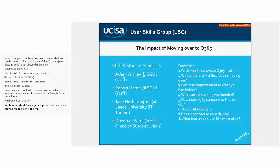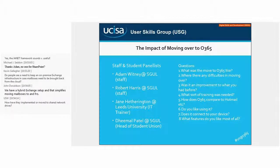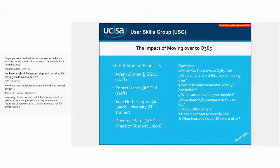A question from Kevin asks whether people see a need to keep on-premises Exchange infrastructure in case mailboxes need to be brought back from the cloud. John responds: because they still have Exchange for staff on-premises they have a hybrid setup that allows mailboxes to be moved to and fro very simply. When they move staff fully, the question will arise as to whether they still need it — but he thinks it's handy to have, even if in a much diminished form, for that extra bit of control.